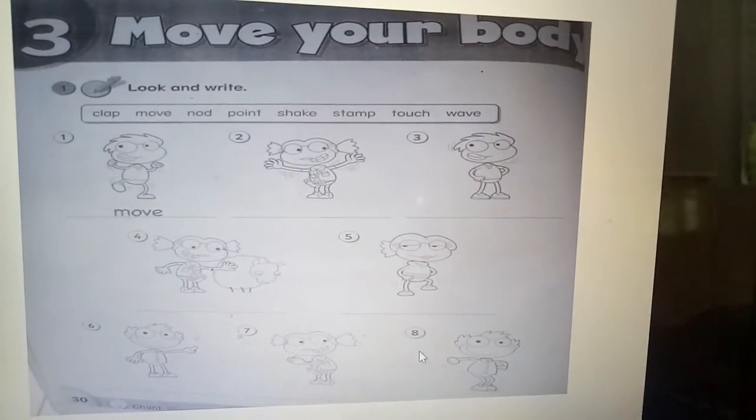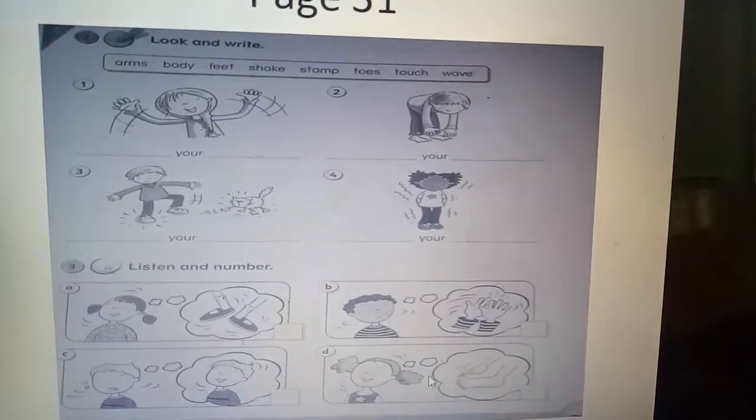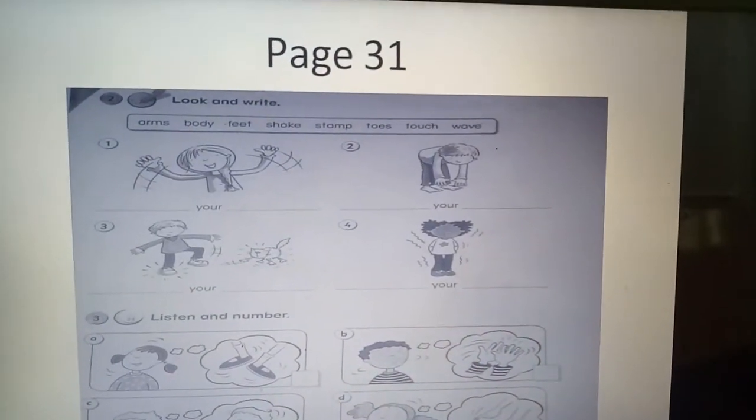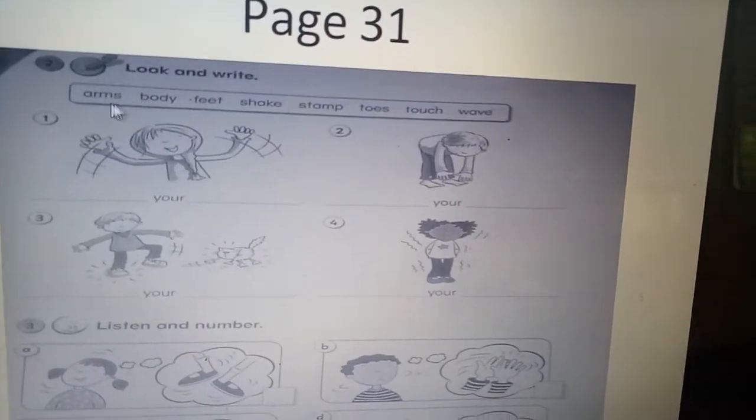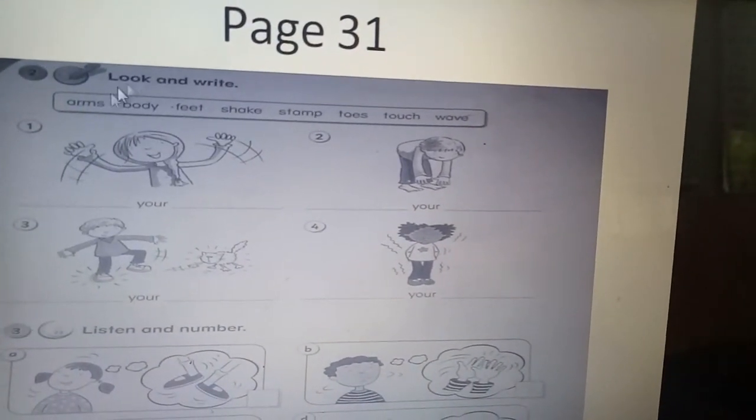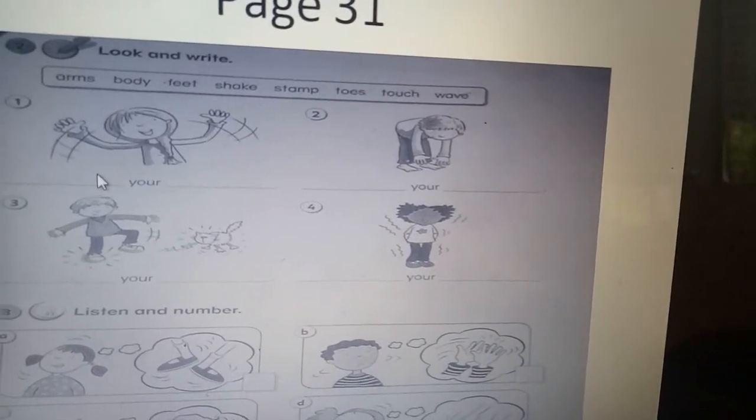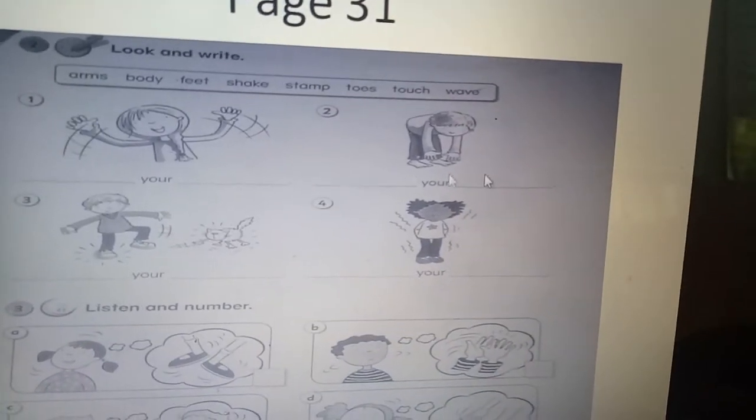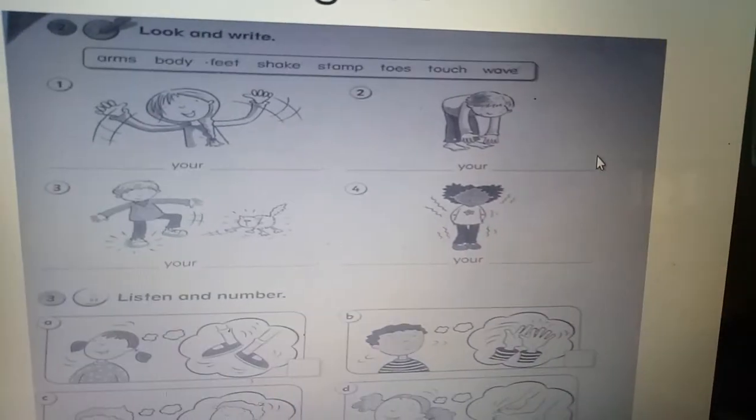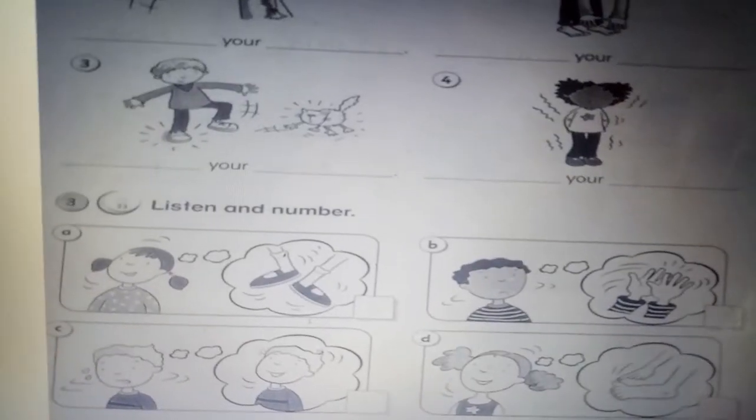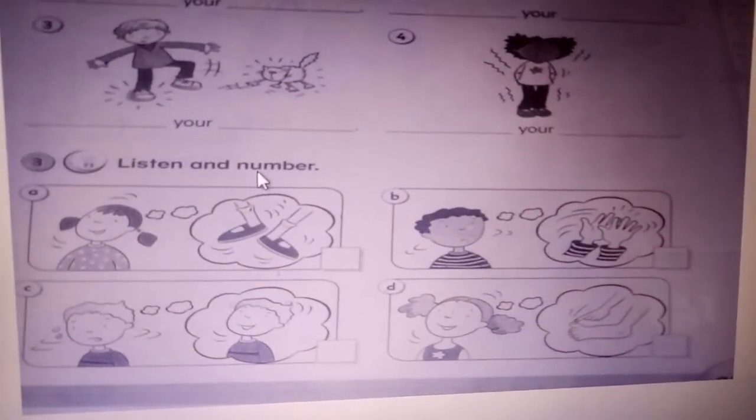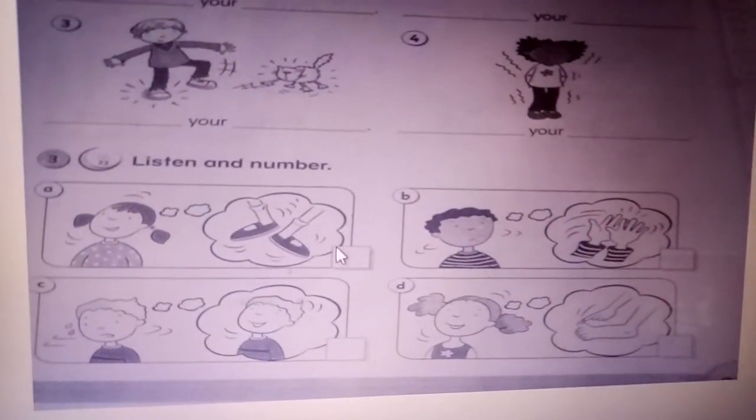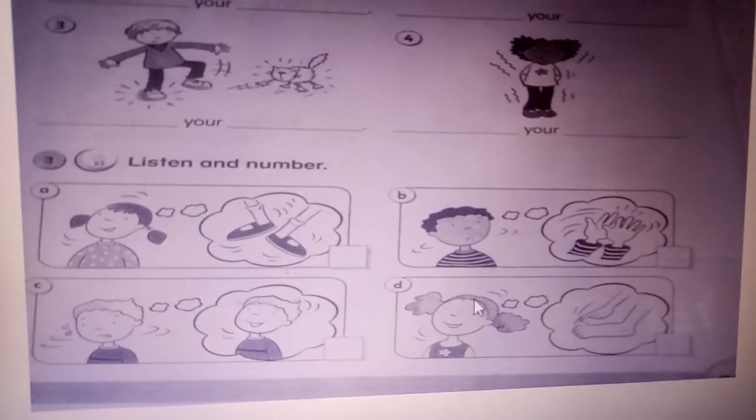And then page 31, activity 2 - the same, look and write. You can take a look at the words here and complete this one. And then for activity 3, we will listen and number. Miss Fina will read, you will listen and give the number here.